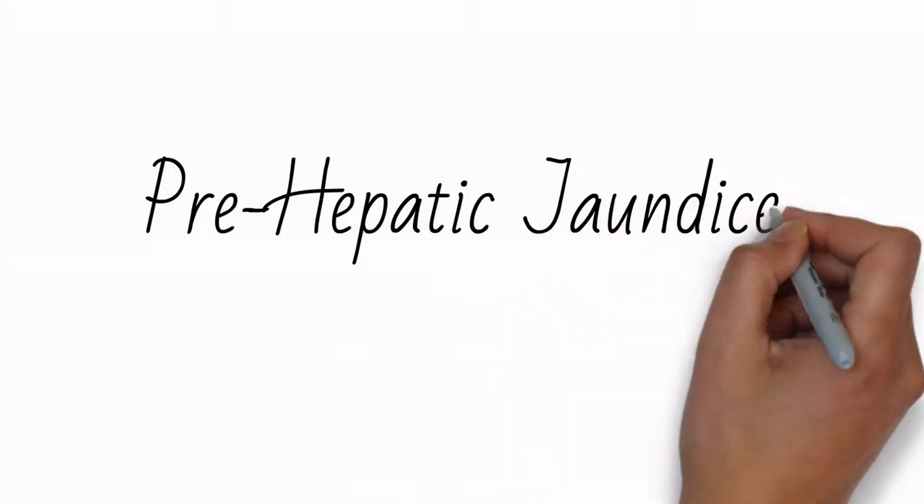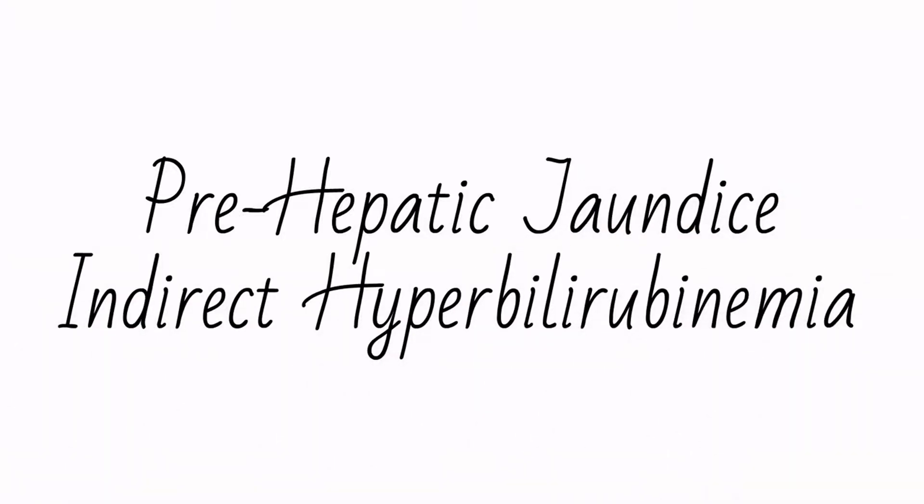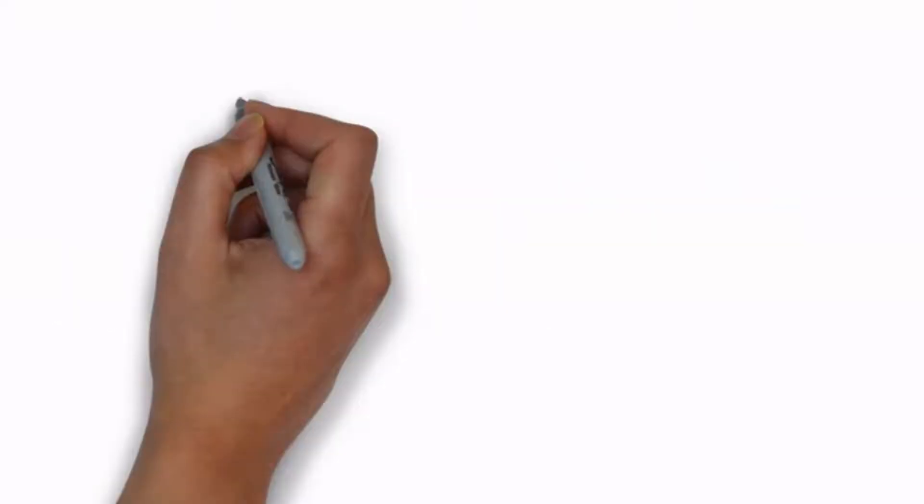Prehepatic jaundice leads to indirect hyperbilirubinemia because this bilirubin is not yet conjugated.